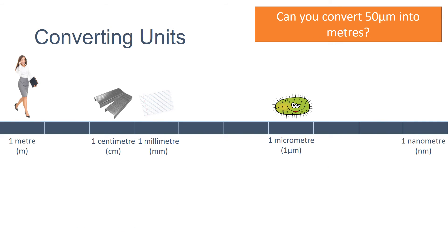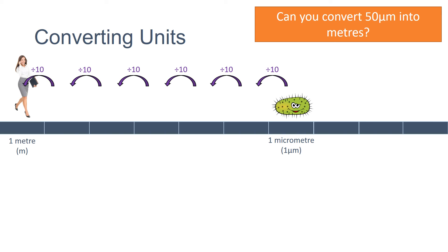We can also do this to convert the opposite way. To convert micrometres into metres, we can use the same methodology. The number of orders of magnitude difference is six. However, this time we need to divide by rather than multiply by ten. So to convert 50 micrometres into metres, we need to divide 50 by a million, which gives us 0.00005 metres.